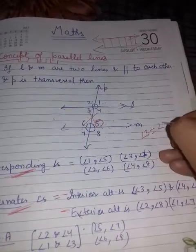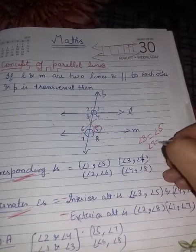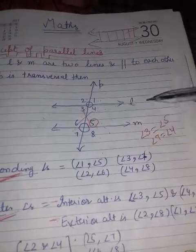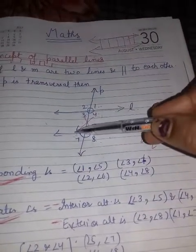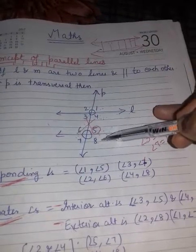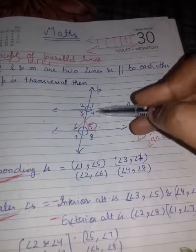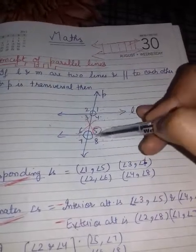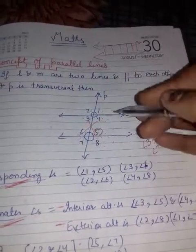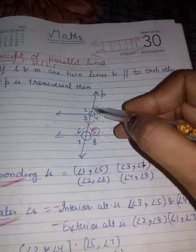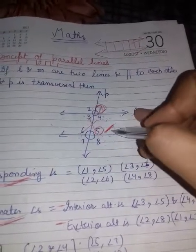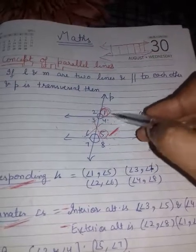Angle 3 is equal to angle 5, and angle 4 is equal to angle 6. If you know any one angle, you can find the other using the alternate interior angle property. For example, if angle 3 is 70°, angle 5 will also be 70°. If angle 1 is known, then angle 5 is also known because both are corresponding angles.